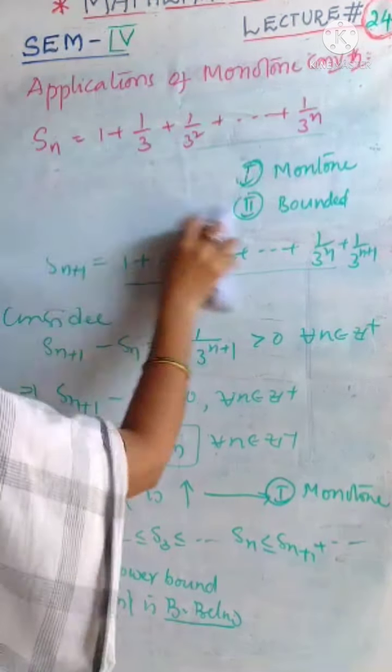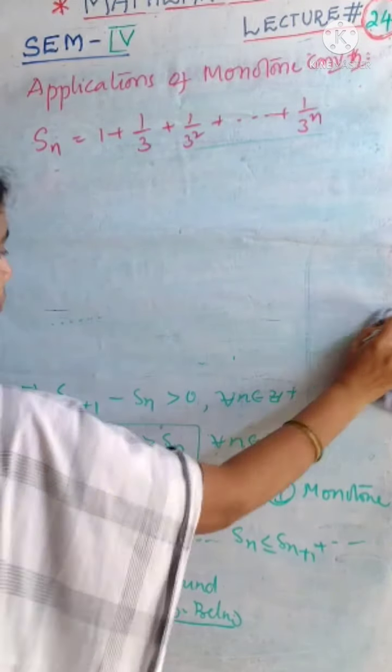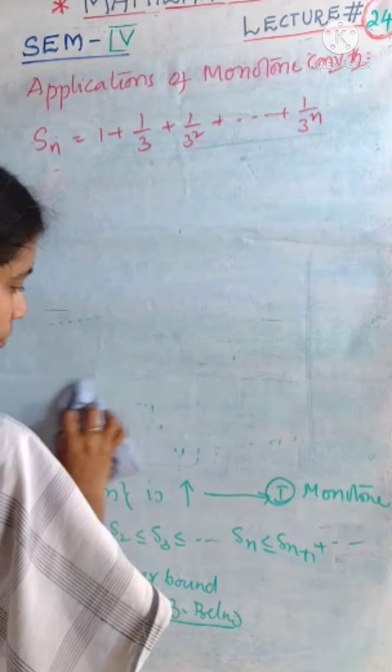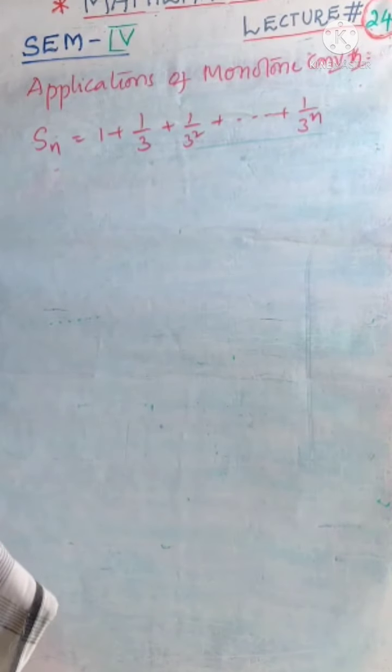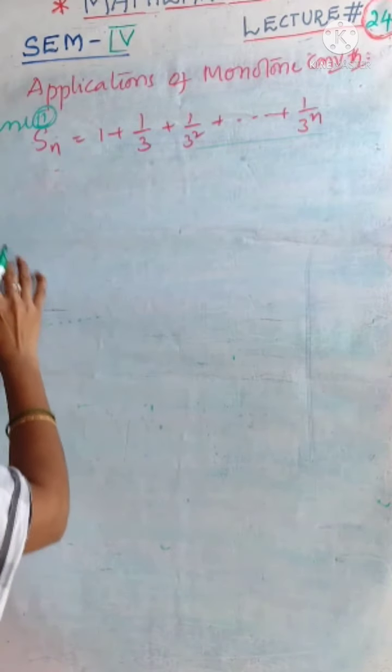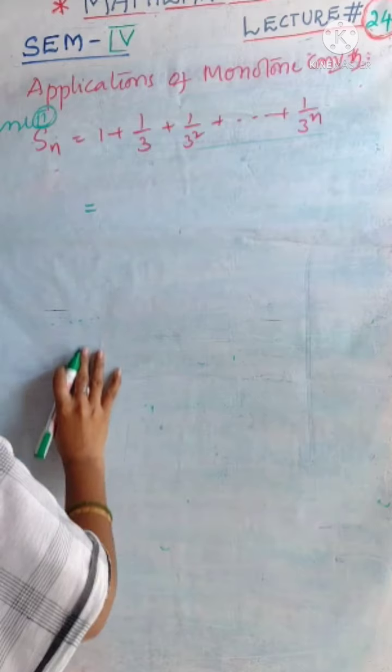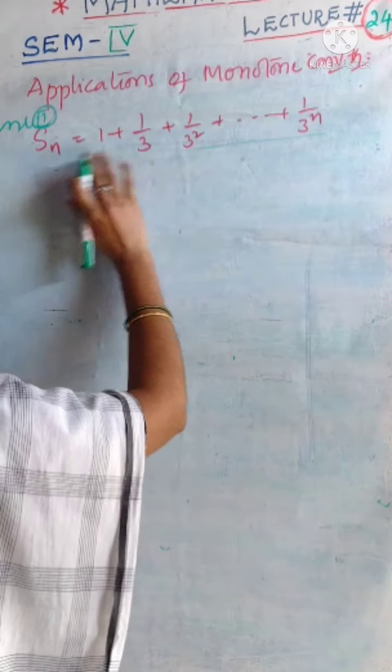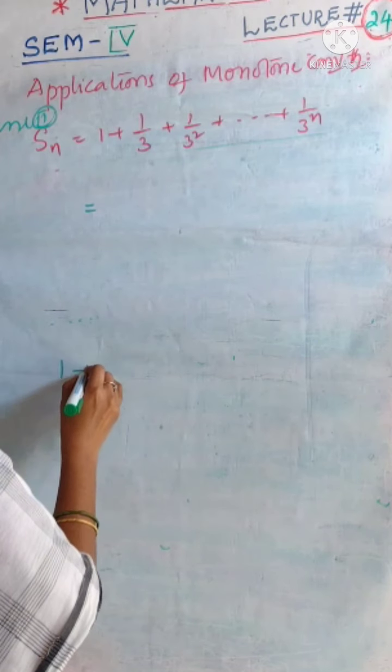Coming to the second case, our Sn is like this. This is nothing but a geometric sequence series. All the terms are in the form of geometric series. What is geometric series?